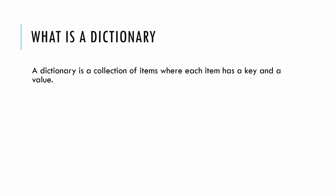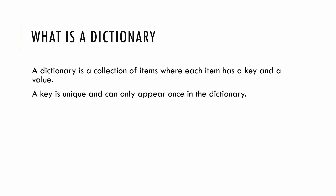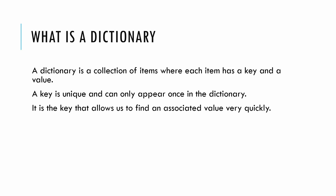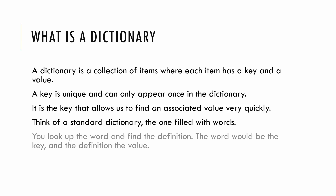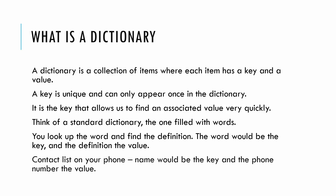So what is a dictionary? A dictionary is a collection of items where each item has a key and a corresponding value. A key is unique — it can only appear once in the dictionary. It is the key that allows us to find an associated value very quickly.